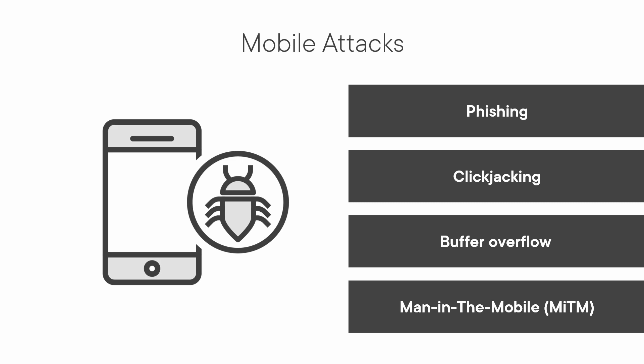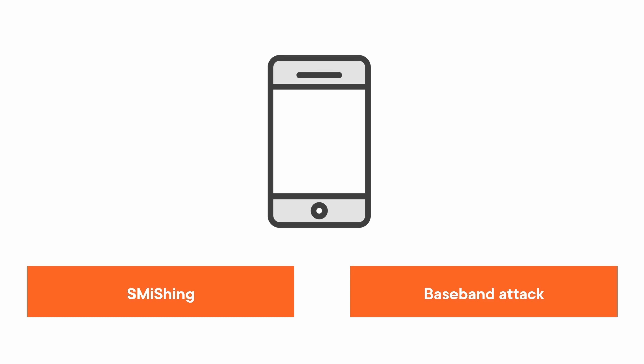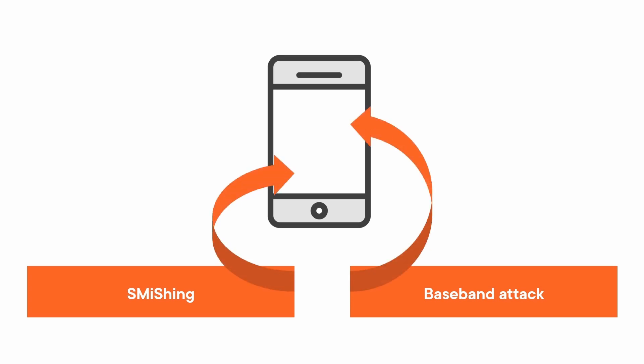Just know that these types of attacks are possible from the browser level. We then have phone and SMS-based attacks, which include smishing — basically phishing via text message — and baseband attacks, where an attacker goes after your phone's baseband processor, which is responsible for connecting you to cell towers.